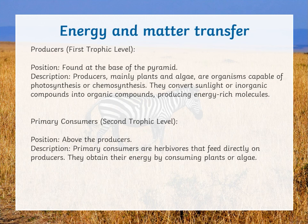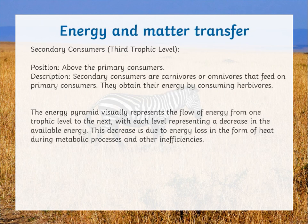Then we have the second trophic level, which are the primary consumers. They are positioned above the producers. Primary consumers are herbivores that feed directly on producers, obtaining their energy by consuming plants or algae.